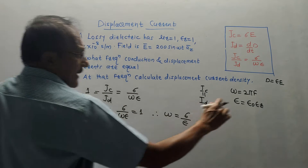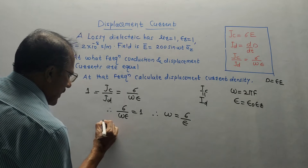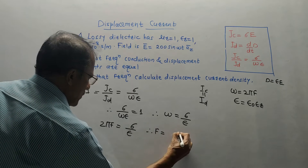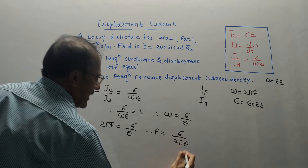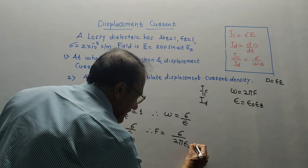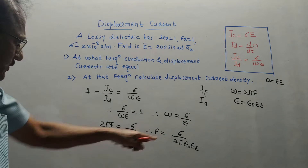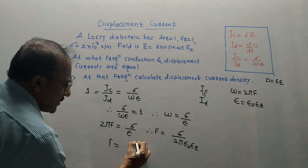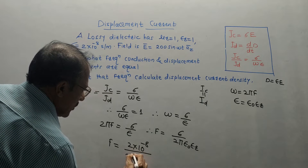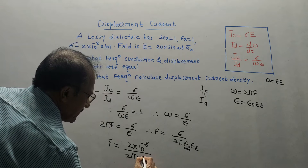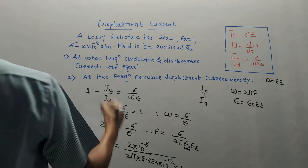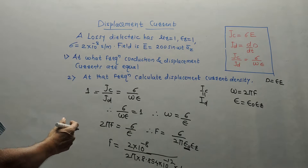Since omega equals 2πf, we write 2πf equals sigma upon epsilon, which means f equals sigma upon 2π epsilon. Now epsilon is epsilon_0 times epsilon_r, so this becomes epsilon_0 times epsilon_r. Putting in the values: f equals sigma, which is 2 × 10⁻⁸, divided by 2π, times epsilon_0 which is 8.854 × 10⁻¹², and epsilon_r equals 1.